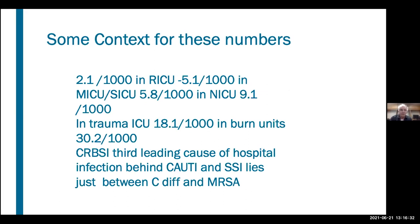ICUs tend to have higher rates of these infections than the floor. In trauma ICUs, these can be as high as 18 bloodstream infections per thousand catheter days. Burn units probably report the highest rates of central line catheter infections in the country. Catheter-related bloodstream infections are the third leading cause of hospital infections overall, behind catheter-associated urinary tract infections and surgical site infections. In the Midwest, rates fall somewhere between C. difficile infection and methicillin-resistant staph aureus in hospitals.